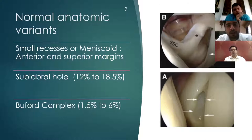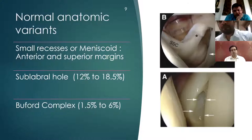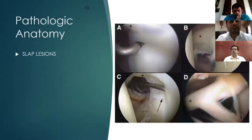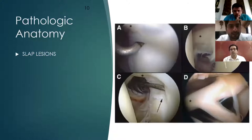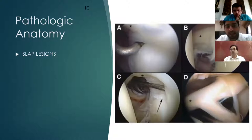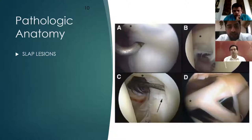There can also be a Buford complex, in which the anterior superior labrum is absent and is replaced by the middle glenohumeral ligament — this can be mistaken for separation of the anterior labrum. Regarding SLAP lesions briefly: type 1 shows a small labral recess with no mobility on probing; type 2 shows degenerative fraying of the biceps anchor; and type 4 is where the rupture extends into the long head of the biceps tendon and combines with a bucket handle tear of the labrum posteriorly.